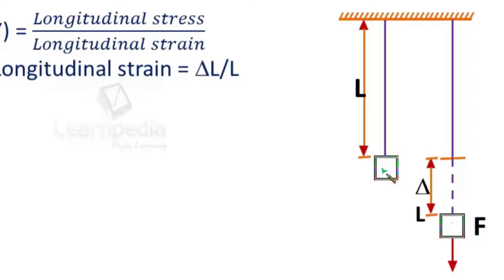Because of this weight, some tension would be generated in this rod or in this wire, and because of that, there will be a corresponding change in the length of this wire.